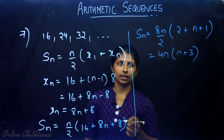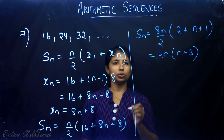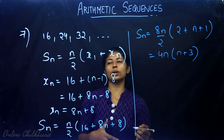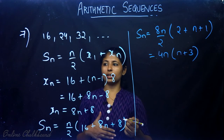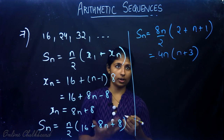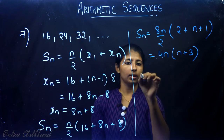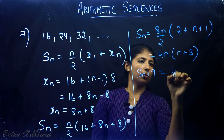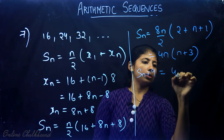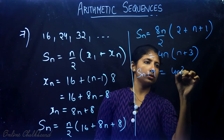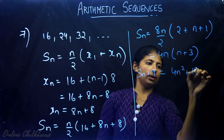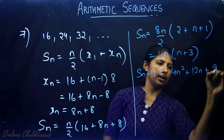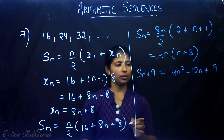Now we add 9 to Sn. So Sn plus 9 equals 4n(n plus 3) plus 9, which expands to 4n² plus 12n plus 9. This is a perfect square.